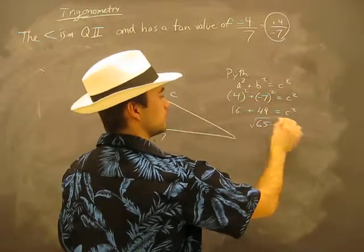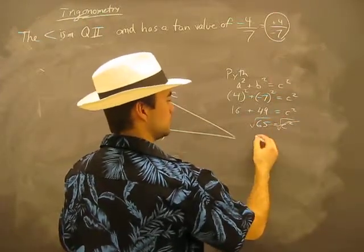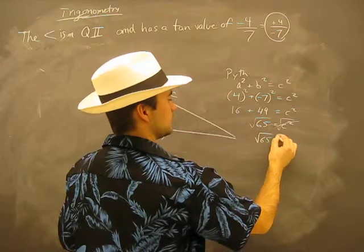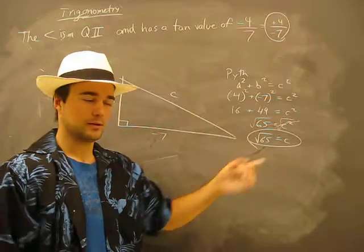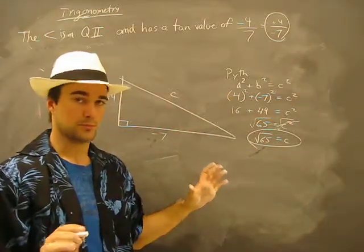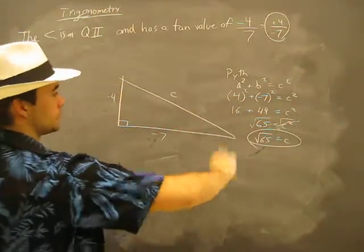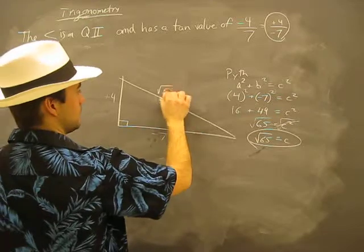Take the square root, and we get root 65 equals C. Do yourself a favor and leave it in radical form, okay? As much as you can, okay? So, I'll just rewrite that like that.